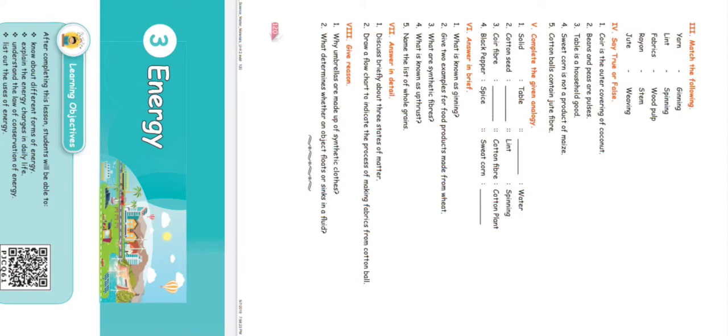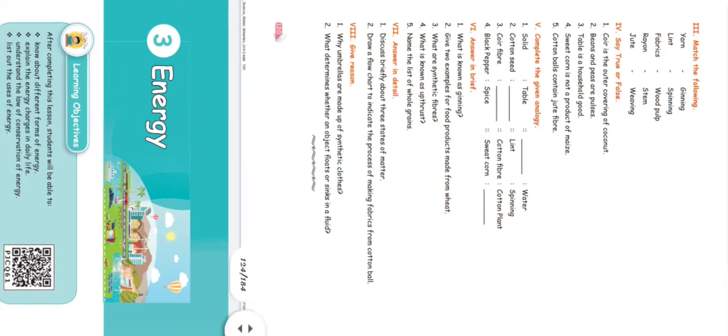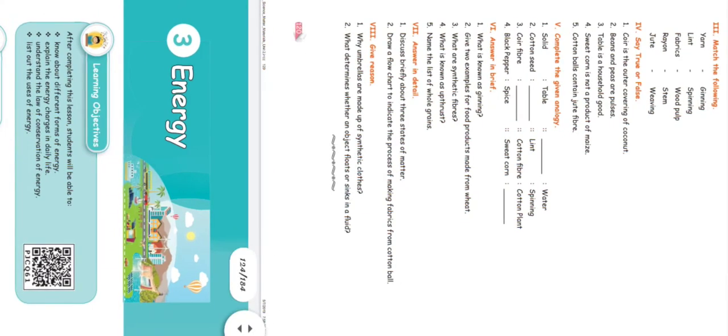Match the following: Yarn — Spinning process. Lint — Ginning. Fabrics — Weaving. Rayon — Wood pulp. Jute — Stem. These are all the right answers.